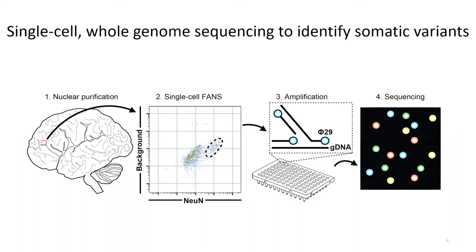To circumvent this, my colleagues and I adopted a single-cell whole genome sequencing strategy. From fresh-frozen post-mortem human brain tissue, we lyse the tissue and collect nuclei. Using flow cytometry for the pan-neuronal marker NeuN, we sort single nuclei into single wells of 96-well microtiter dishes. Within each well, we perform whole genome amplification, yielding microgram quantities of DNA from the picograms that come in with each nucleus. This amplification comes with some level of noise and artifact, which we are always cognizant of. From that DNA we have enough material for quality control, whole genome sequencing, and subsequent validation.